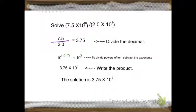Then, to divide the powers of 10, subtract the exponents. So, basically, 10 minus 7 equals 3.